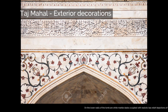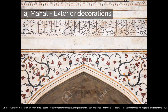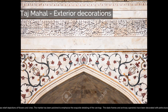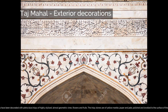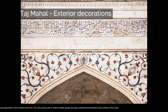On the lower walls of the tomb are white marble dados sculpted with realistic bas-relief depictions of flowers and vines. The marble has been polished to emphasize the exquisite detailing of the carvings. The dado frames and archway spandrels have been decorated with pietra dura inlays of highly stylized, almost geometric vines, flowers, and fruits. The inlay stones are of yellow marble, jasper, and jade, polished and leveled to the surface of the walls.